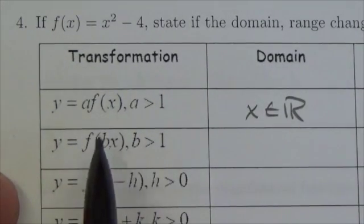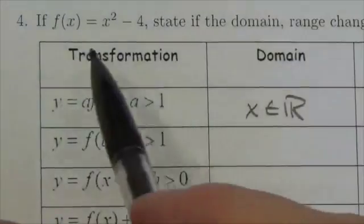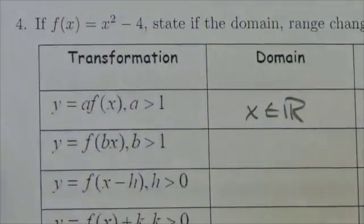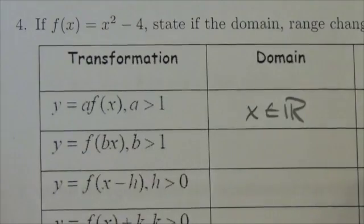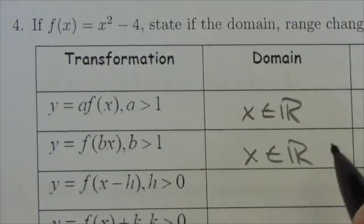Well, this is going to be a horizontal stretch by a factor of 1 over b. Now I got to think what the domain of the original was, and the domain is going to be all reals. Well, a horizontal stretch won't affect that, so the domain is going to stay all reals.